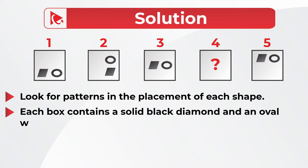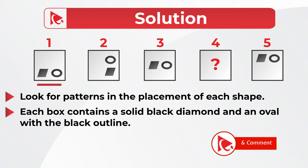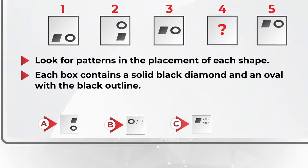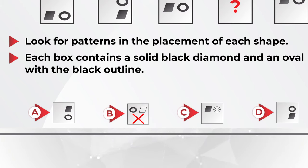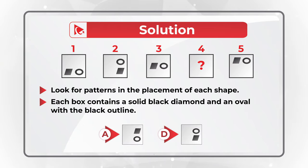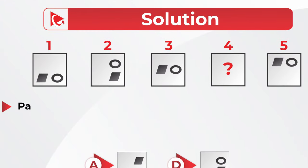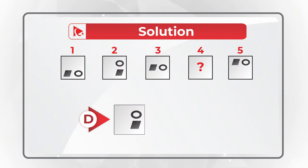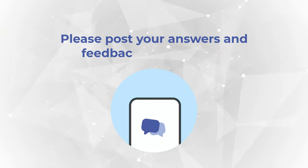The smaller shapes inside the squares are always a diamond filled with black and an oval with a black outline. This pattern is consistent for shapes one, two, three, and five, so square four will have similar shapes, excluding choices B and C. The second pattern is that the oval is always next to the diamond — either to the right or on top of it. Based on this, the correct choice is D.